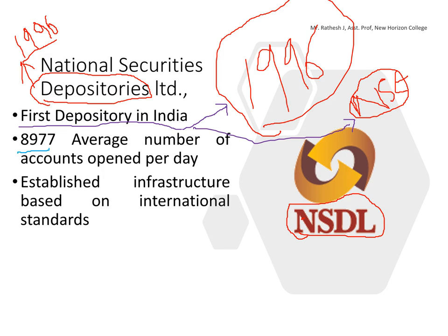Many people ask: why was NSDL established? What is the purpose? The idea was to create one technology platform to trade and settle transactions, and to maintain a standardized settlement platform. NSDL was established with the intention of providing standardized infrastructure for both national as well as international transactions.